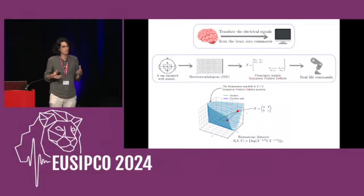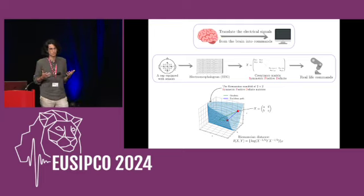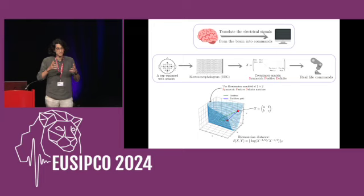Imagine a world where thoughts become commands, where a paraplegic person could control his prosthetics only using his brain. This is the world that could be made possible using brain-computer interfaces, or BCIs.